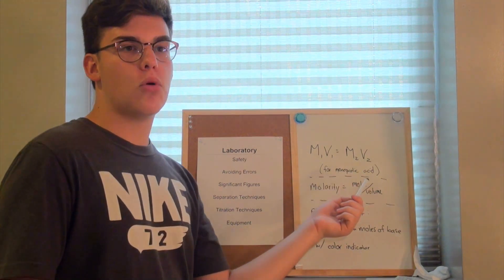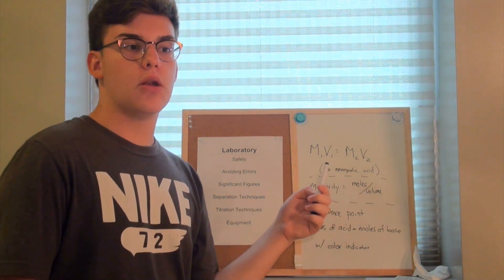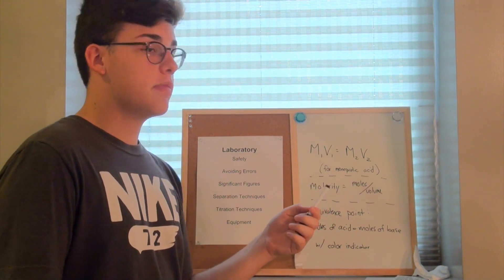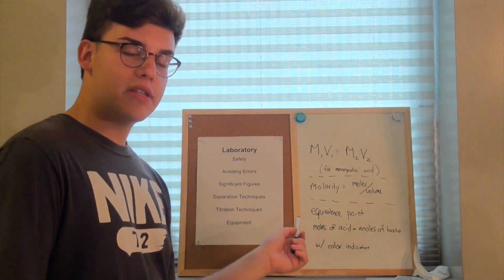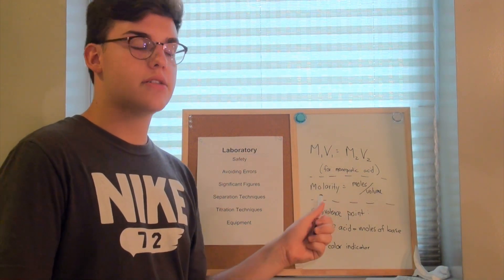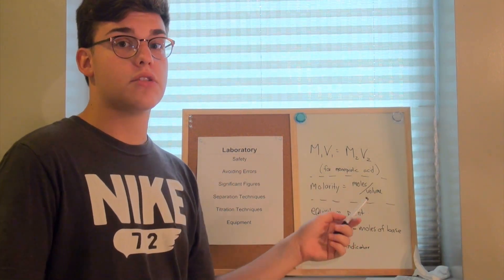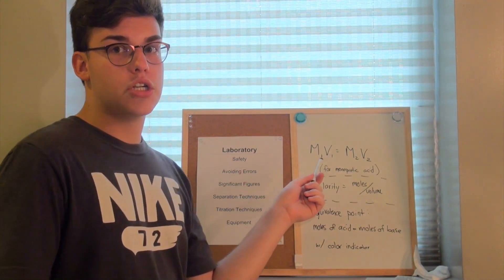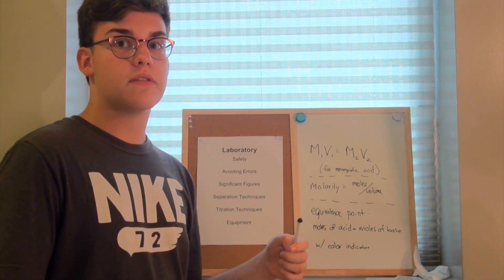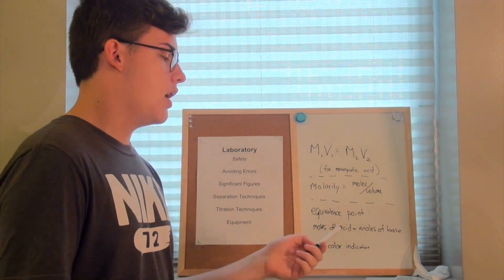Let's say you have 5 moles of a substance and 1 liter of water. So you would have 5 molars of that solution. The equivalence point is the point where the moles of acid is equal to the moles of base. And without using this equation, you can discover the equivalence point using a color indicator.